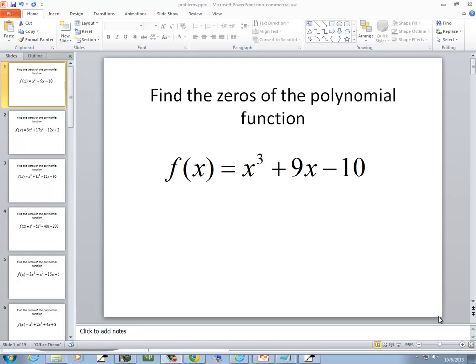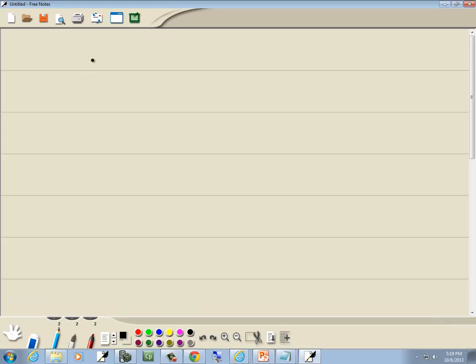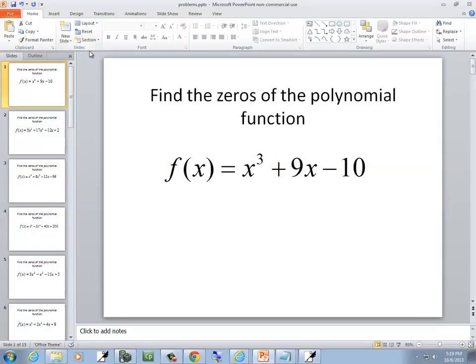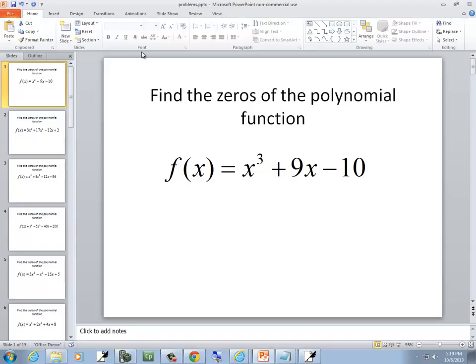In this problem we want to find the zeros of the polynomial function. So we got f(x) equals x to the third plus 9x minus 10.